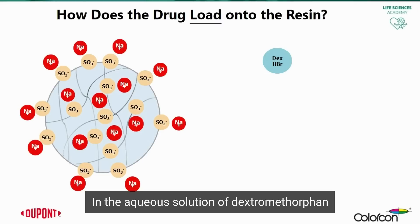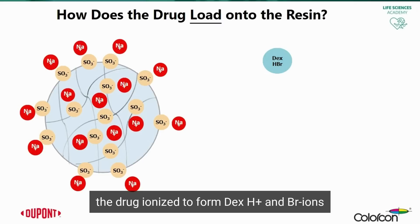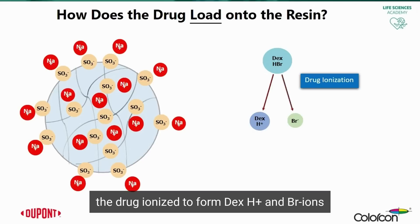In the aqueous solution of dextromethorphan hydrobromide, the drug ionizes to form the DexH+ ion and the Br- ion.